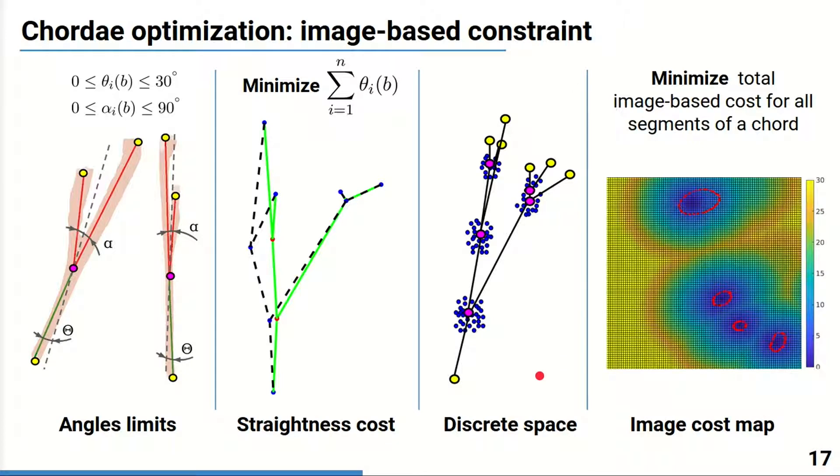And finally, the image-based constraint is expressed by the total cost of the tree segments points obtained from a cost map, which indicates the level of proximity of the point to the chordae center, while penalizing going out of the chordae contours. A slice of such a map you can see here on the slide, where the chordae contours are displayed in red.